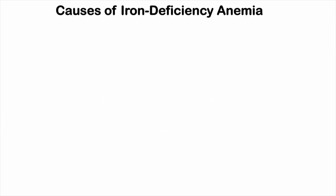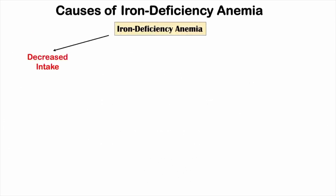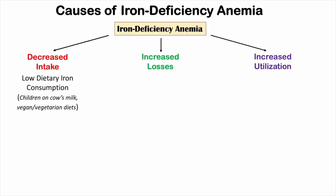Now let's talk about the causes of iron deficiency anemia. Iron deficiency anemia can be broken down into three categories of causes: decreased intake of iron, increased losses of iron, and increased utilization. These are the three main categories. Now let's get into the more specific causes in each category.